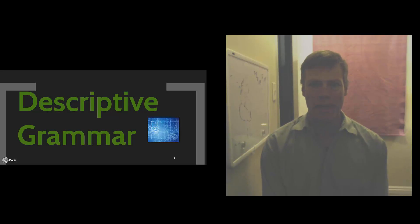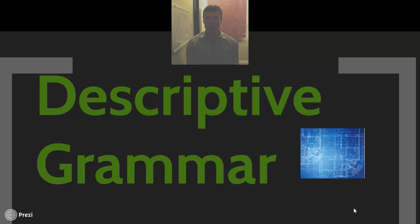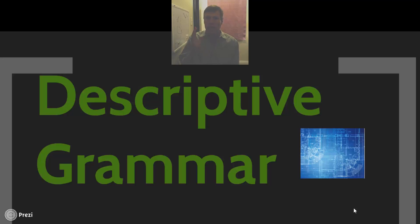Hello, my name is Randall Eggert and this is for the class Bad Words and Taboo Terms. This is the fourth in a series of four presentations about how linguists approach grammar. As we've talked about, there are three different types of grammar that we think about as linguists. There's prescriptive grammar, which is the least interesting — that's the one where people tell you how it's correct to speak and how it's incorrect, what's proper, what's improper. It really doesn't tell us much about what it means to be human.